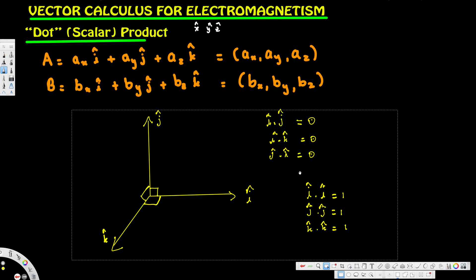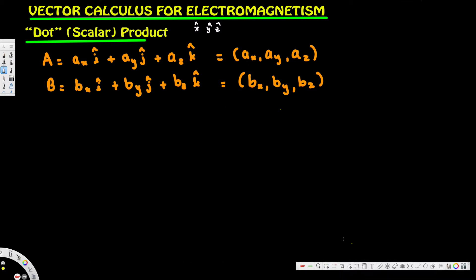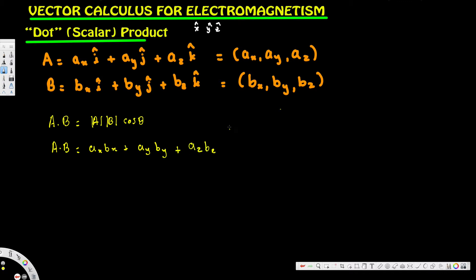When we dot product vectors A and B, we get |A||B|cosθ, but there is another way to express this. A·B equals ax·bx plus ay·by plus az·bz. This is because i·i = 1 (same axis), so ax·i dotted with bx·i gives ax·bx, and the same applies to the y and z components.